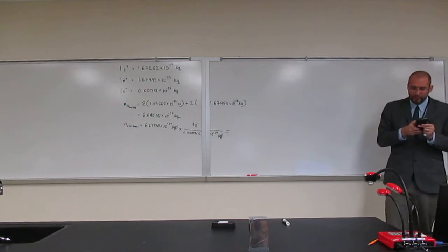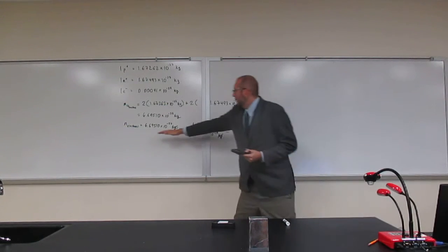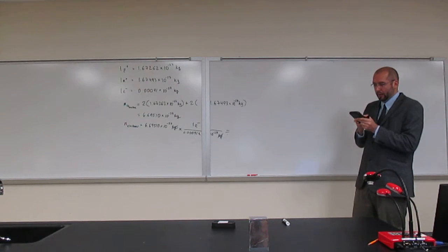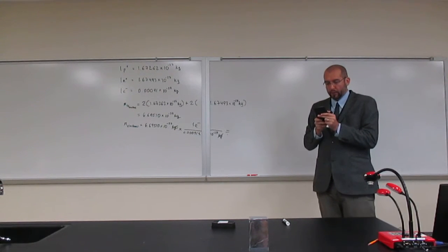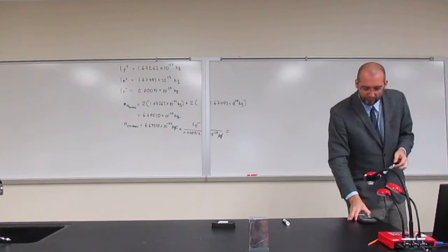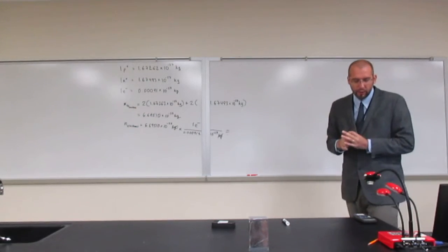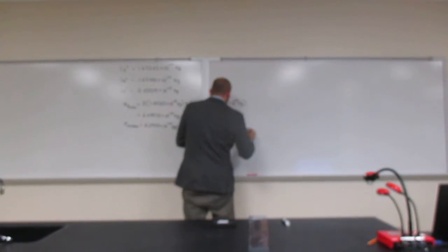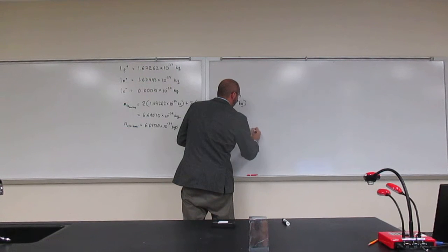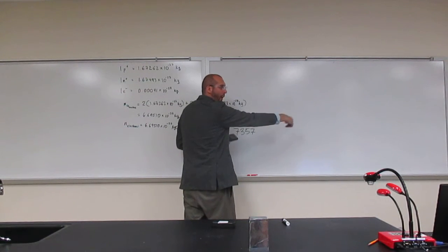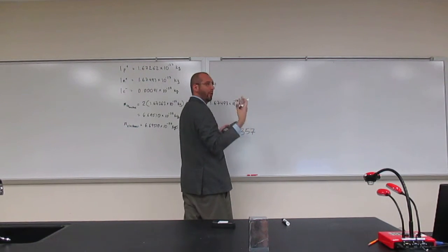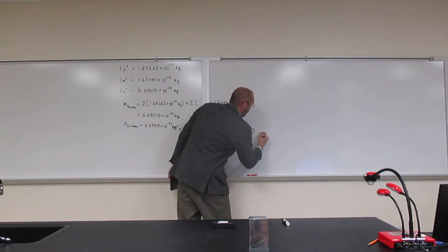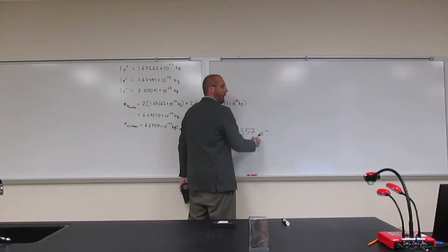So we take that, divide this number that we got by this number, 0.00091 times 10 to the negative 27. And what do I get? Hopefully the same thing as you. What did we get, guys? 7,357. Yep. 7,357 point whatever, right? In my case, 2, 5, okay? There's no such thing as a quarter of an electron. But we also want to remember our units. So electrons, okay?